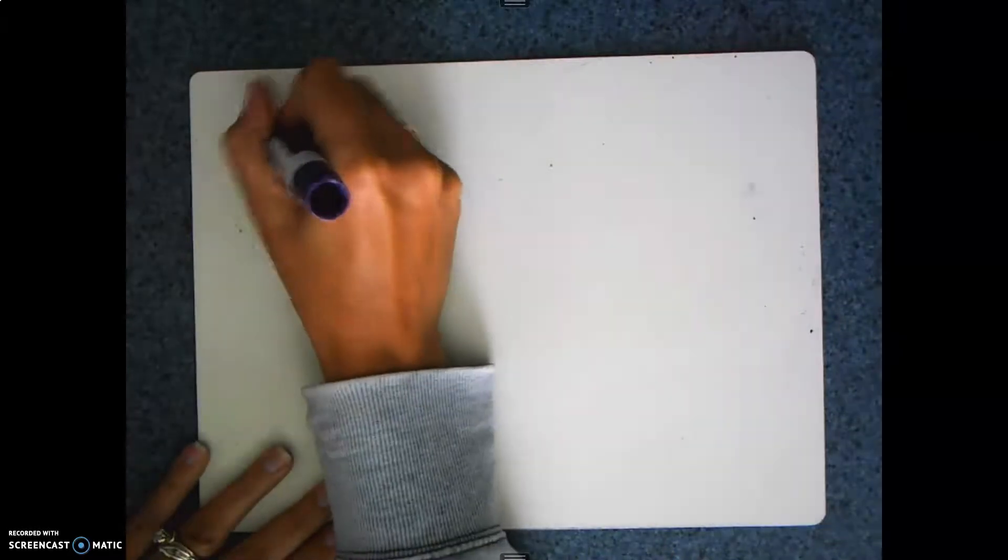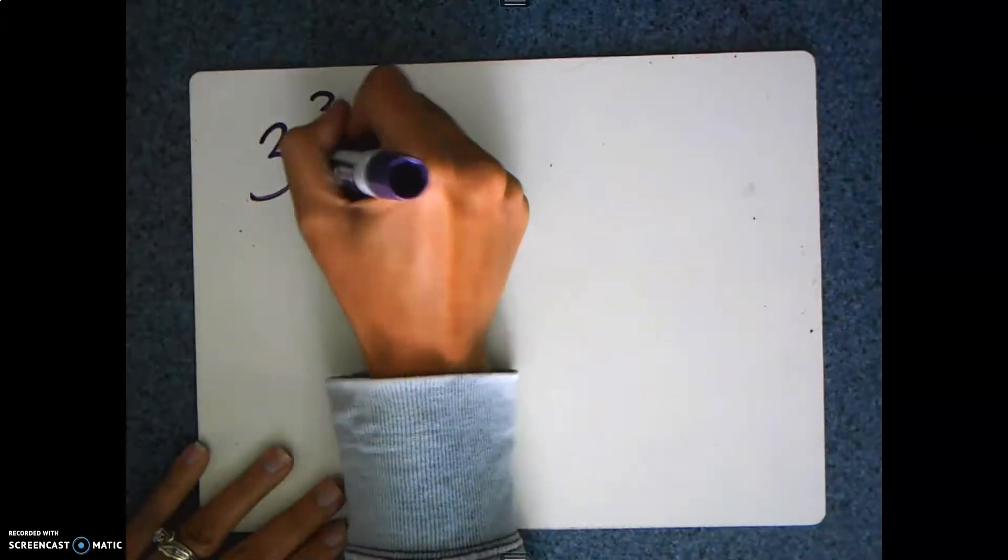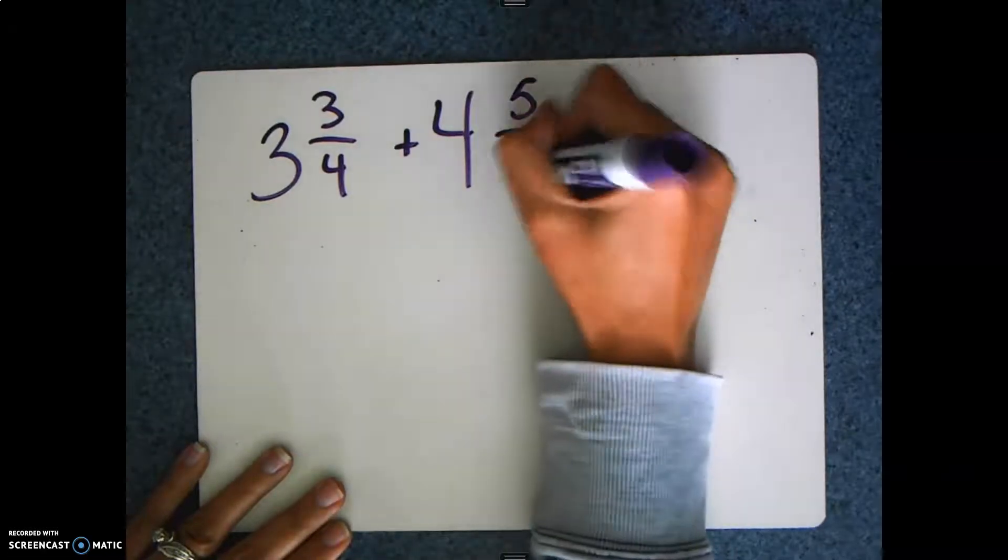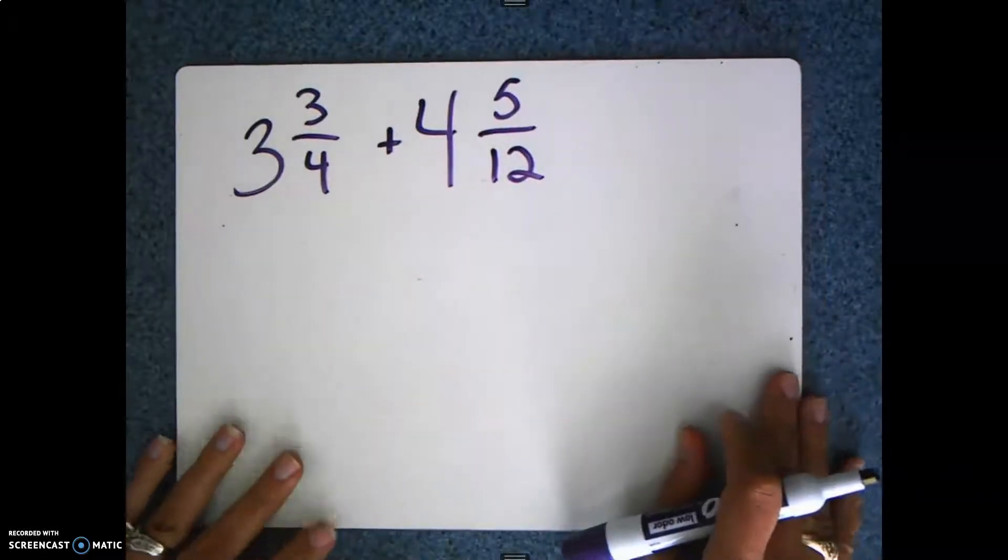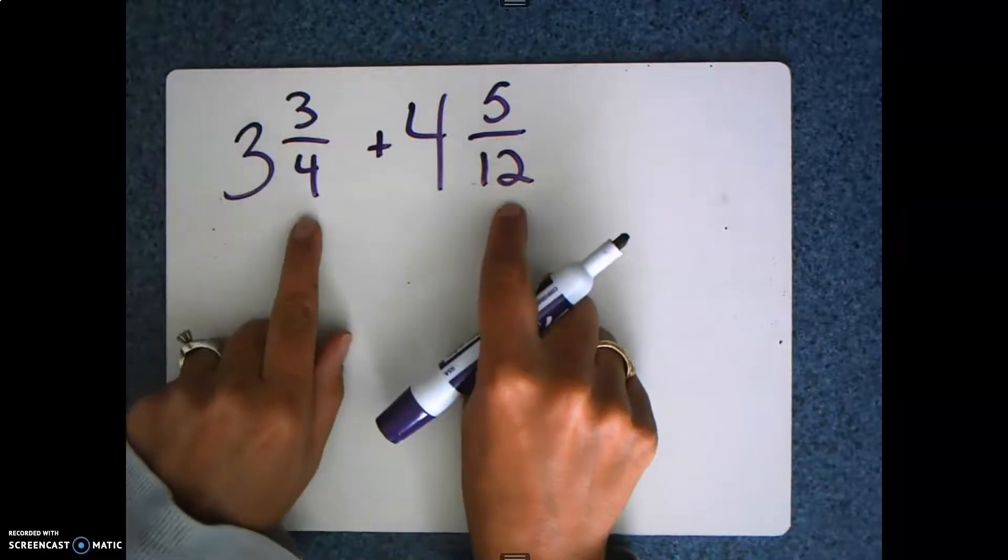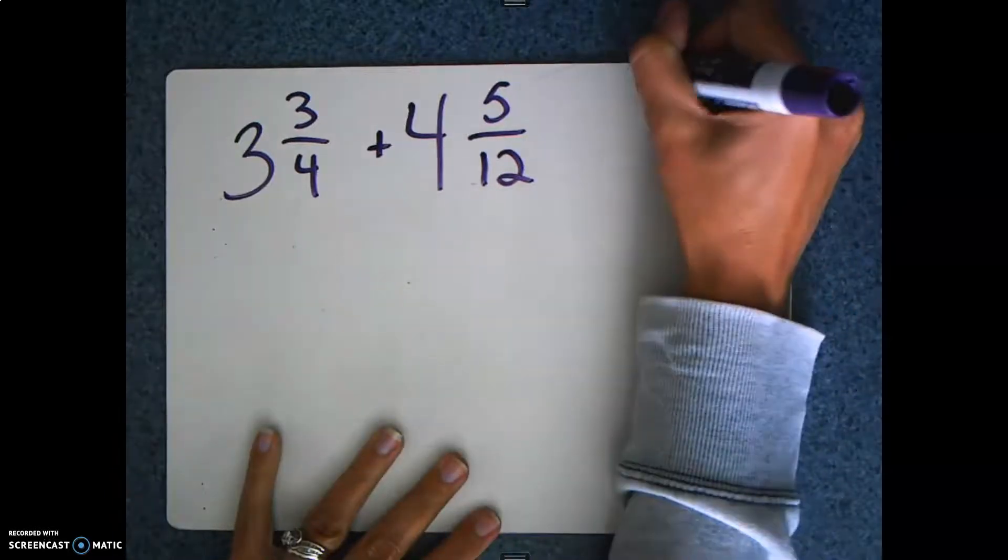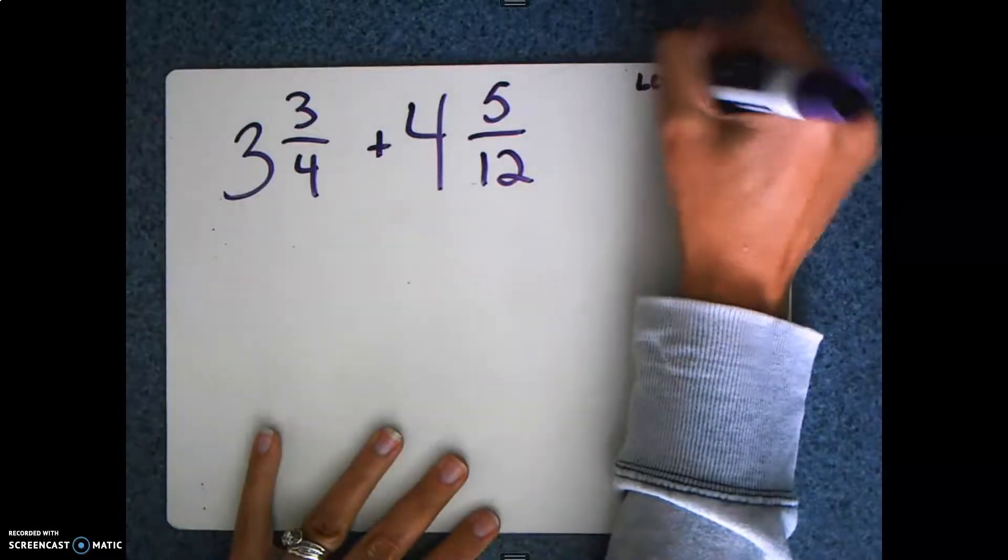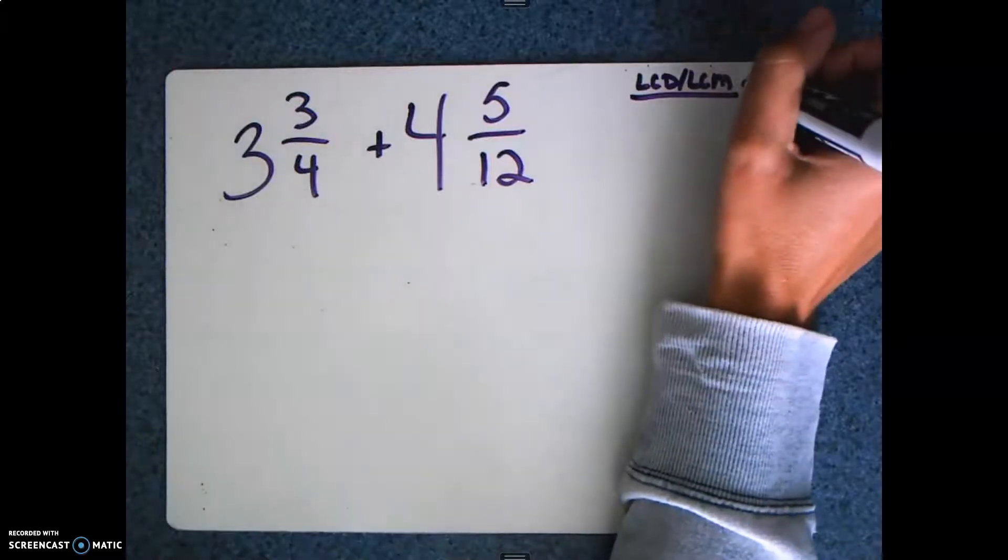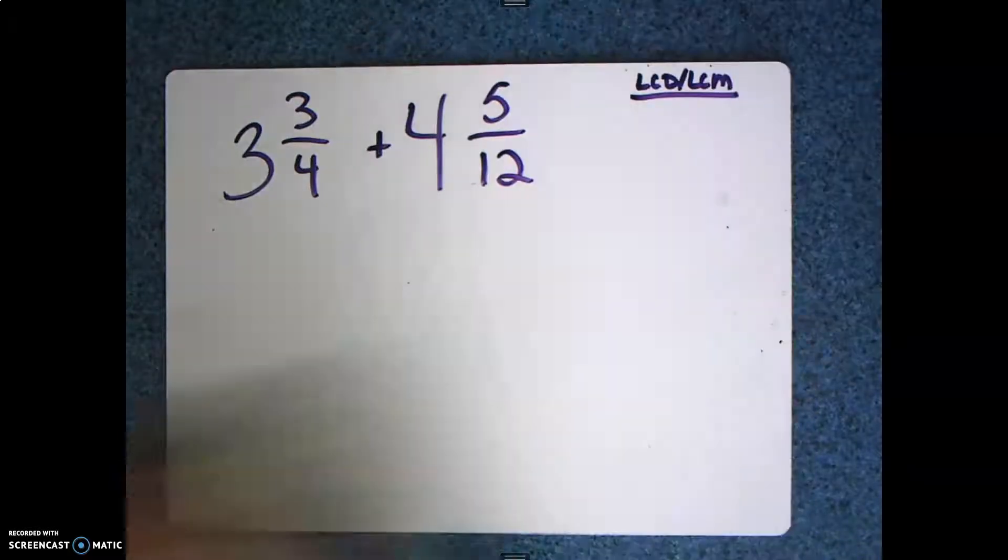So I'm going to use the problem 3¾ plus 4⁵⁄₁₂. Now remember that the first thing that you're going to do is you're going to look at your fractions. We have to look at ¾ and ⁵⁄₁₂. We need to find a lowest common multiple or lowest common denominator for ¾ and ⁵⁄₁₂. That's our first step.